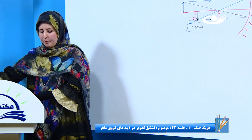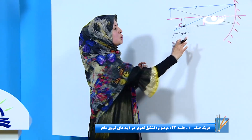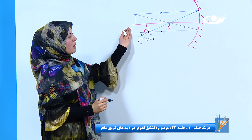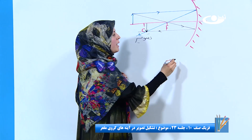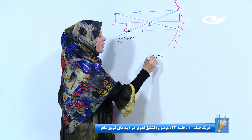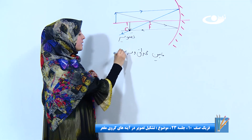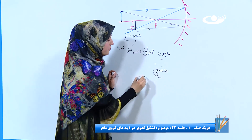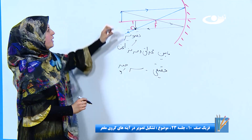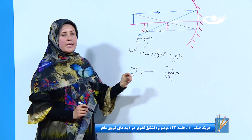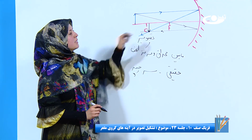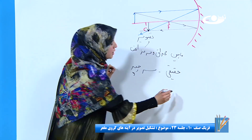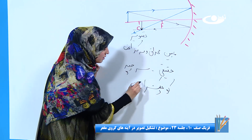تصویر را ما پیدا کردیم. در کجا تشکیل شد؟ مابین محرق و مرکز انهنا. حقیقیه چون محور اصلی ما پشروی آینه است. سرراسته است یا سرچپه؟ سرچپه. پس مابین محرق و مرکز انهنا مشخصات تصویر: حقیقی، سرچپه. ارتفاع تصویر ما خوردتر از ارتفاع جسمه و می‌گیم کوچکتر از جسم.